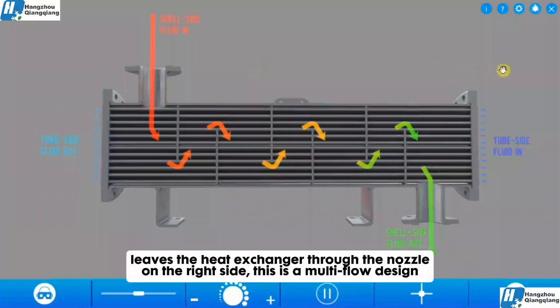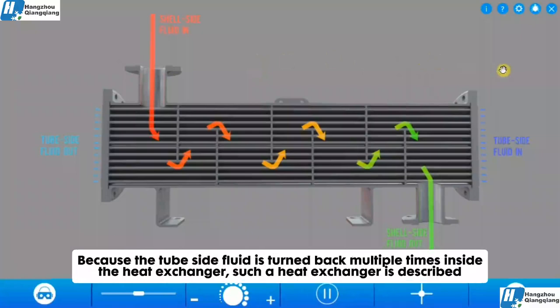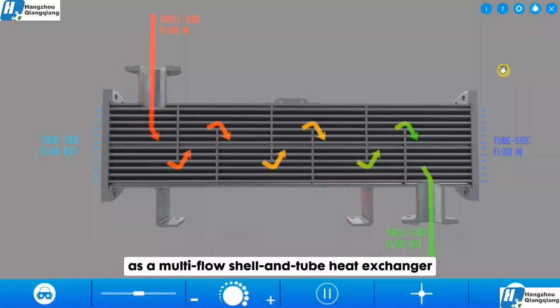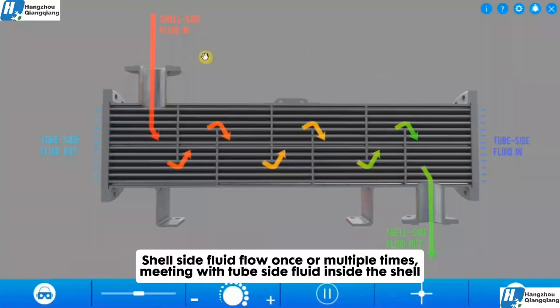If the tube side fluid finally leaves the heat exchanger through the nozzle on the right side, this is a multi-flow design. Because the tube side fluid is turned back multiple times inside the heat exchanger, such a heat exchanger is described as a multi-flow shell and tube heat exchanger. The shell side fluid can flow once or multiple times, meeting with tube side fluid inside the shell.